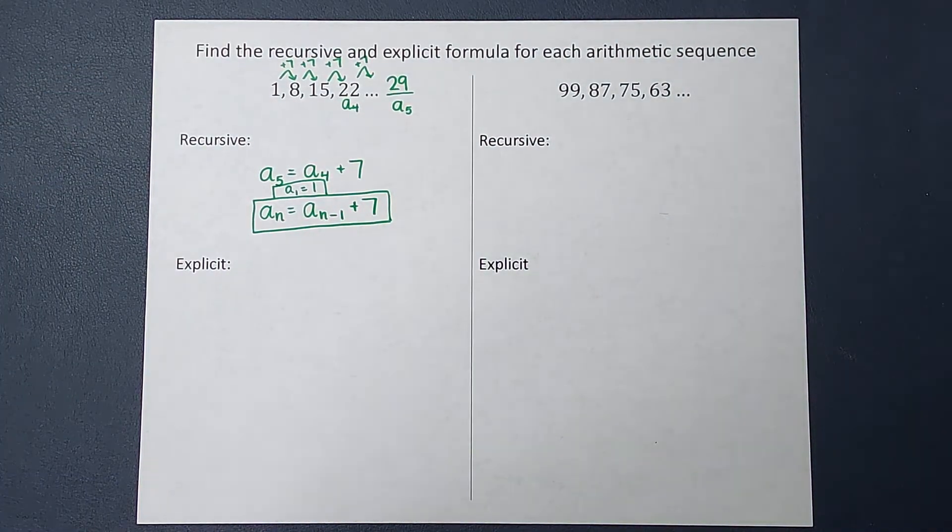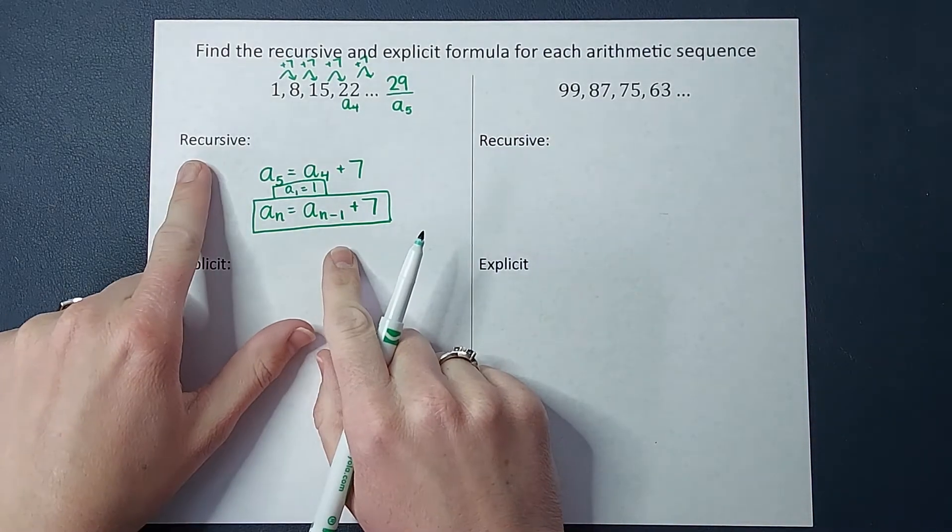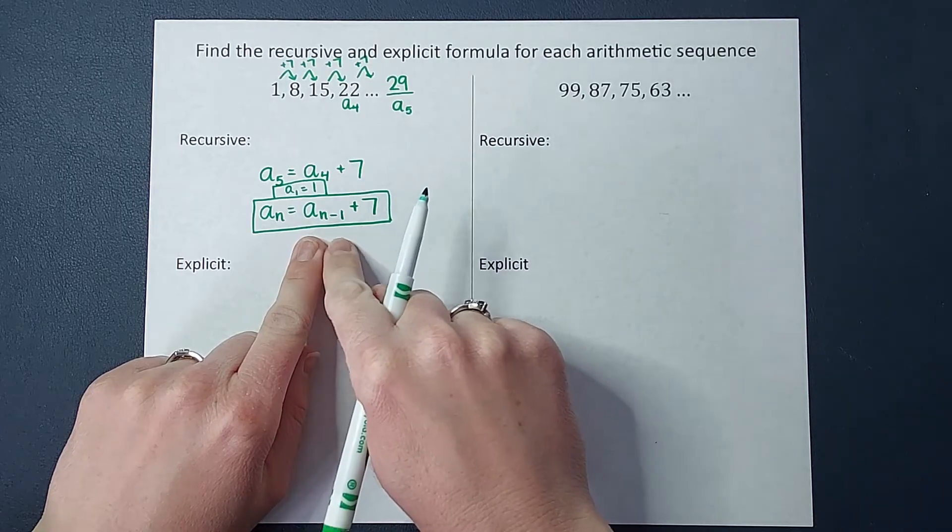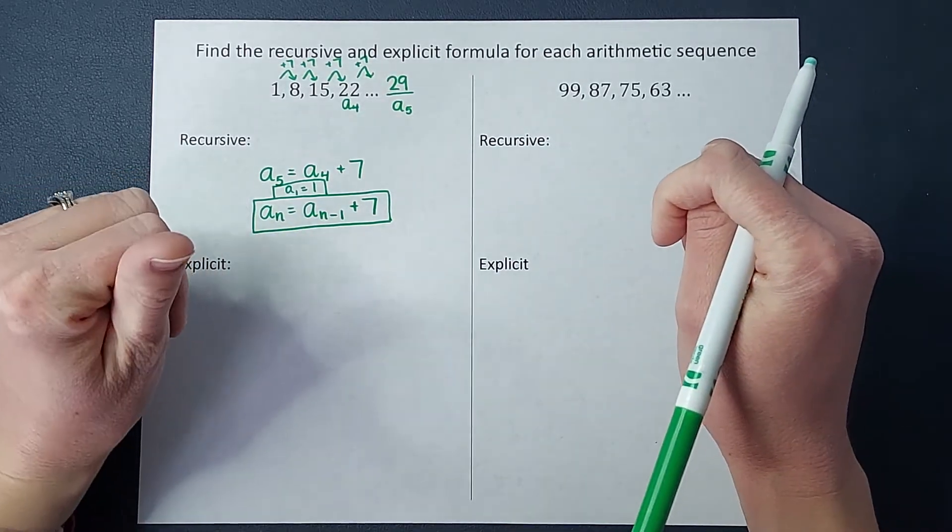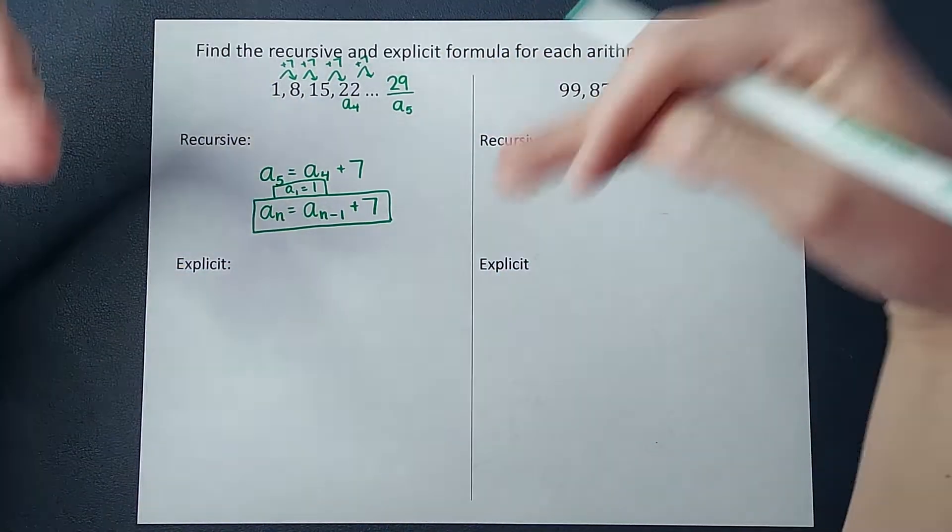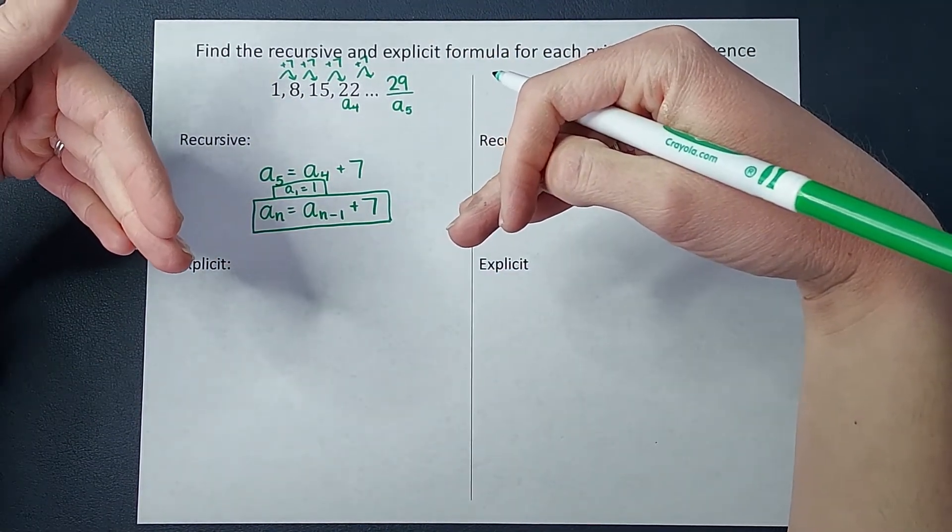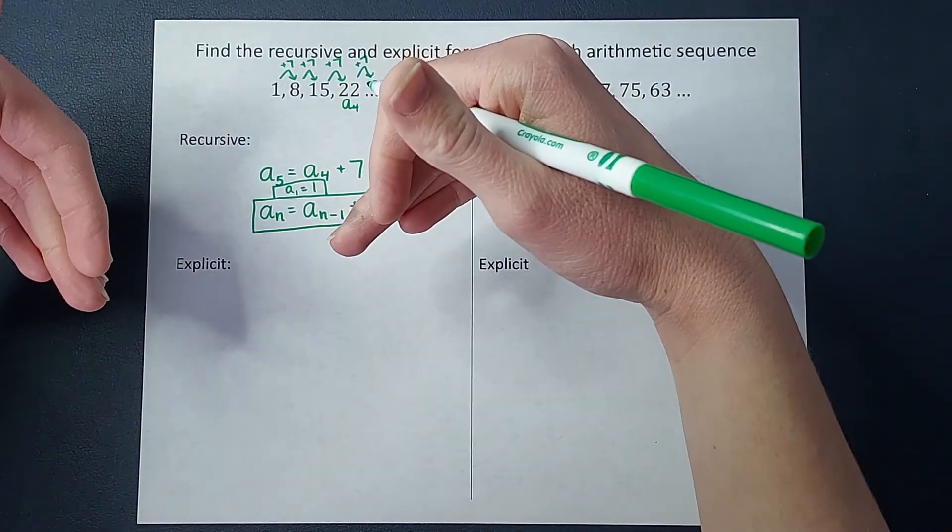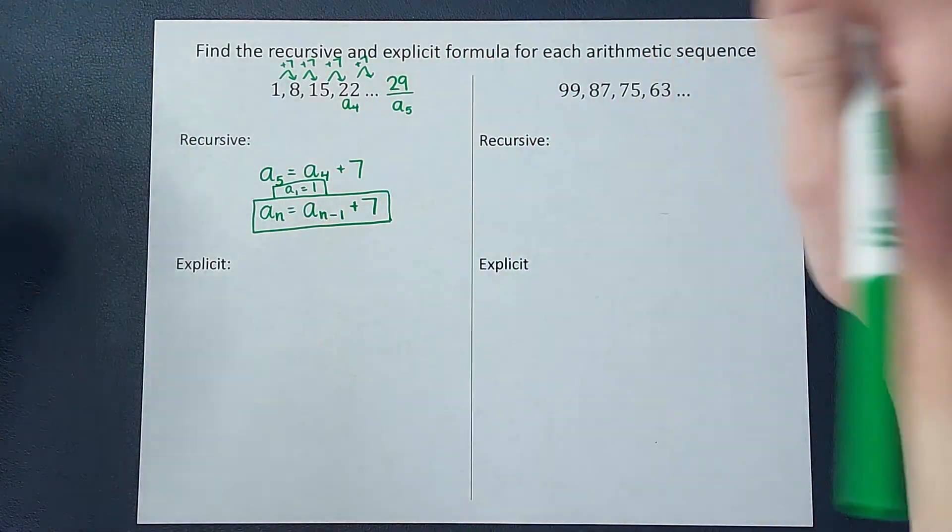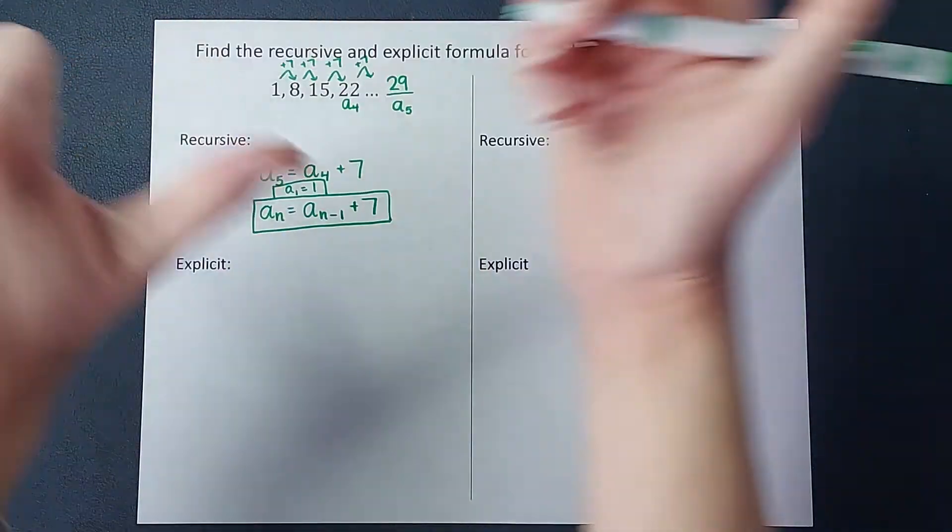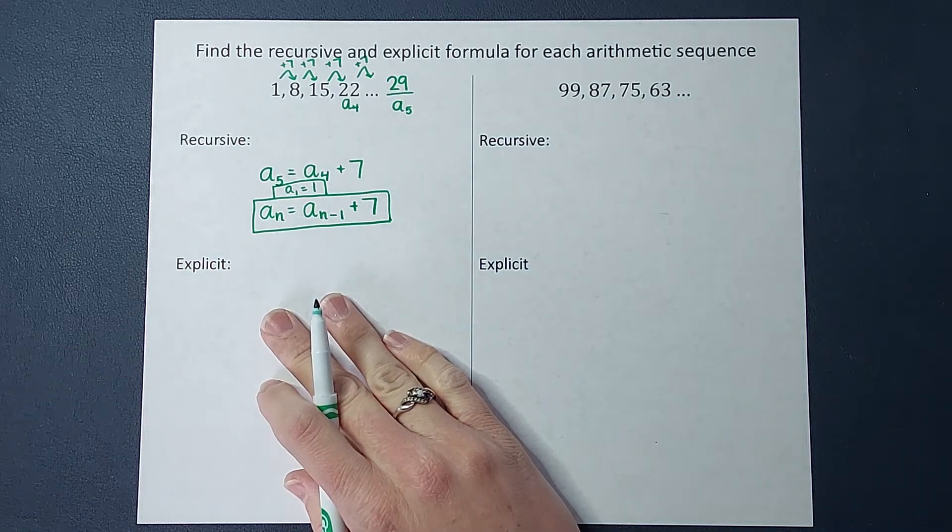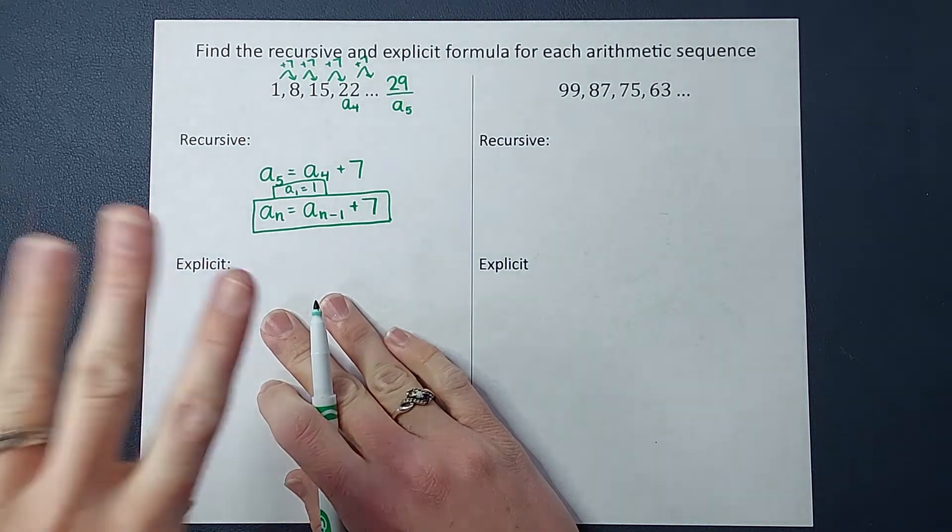So you might notice that for the recursive formula, you have to know the number before in order to get the next number. If I want to know the 500th term in this sequence, I need to know the 499th. I'm going to know that one, I have to know the one before that one. So the recursive is helpful, but it's not super helpful if I want to know a term way far out. So guess what? That's where the explicit formula comes in.